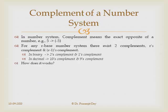What is the complement of a number? Complement means the exact opposite of a number — for example, minus 5 is the complement of 5. For any R-based system there exist two complements. For binary: 2's complement and 1's complement. For decimal: 10's complement and 9's complement.